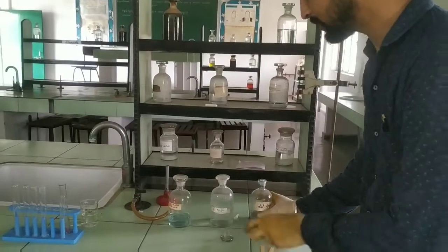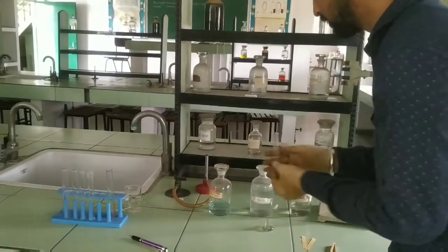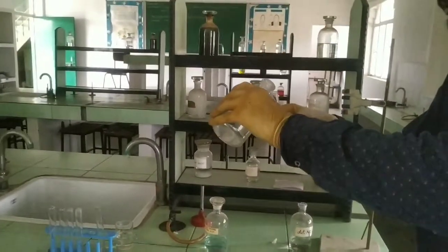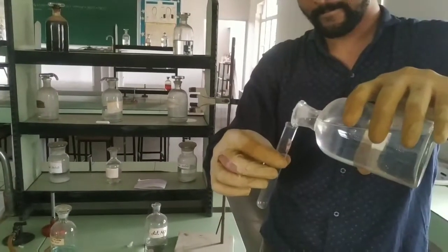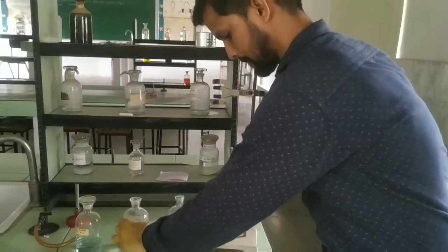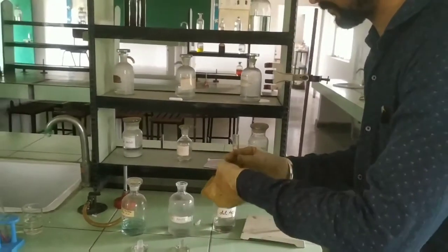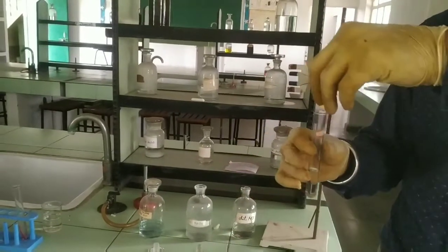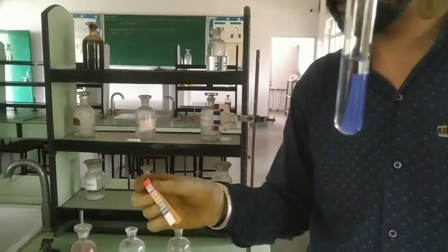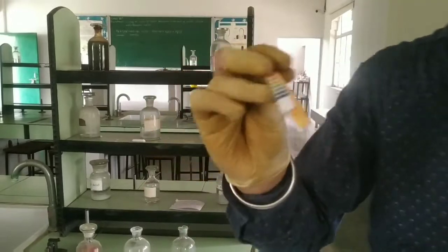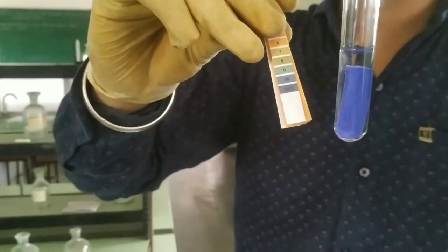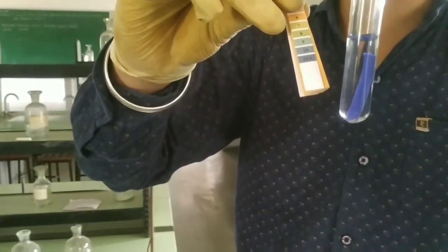Now I will show you sodium hydroxide. You have to take sodium hydroxide in a beaker and add this paper in it. Here the color of this pH paper will change to blue violet color. So this will be 10.5, meaning sodium hydroxide is basic in nature.